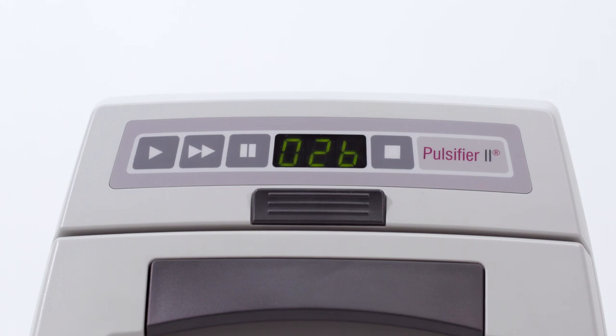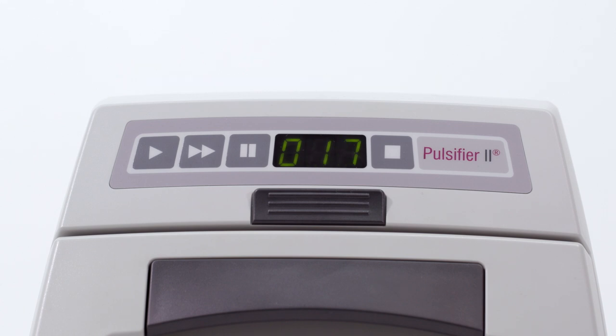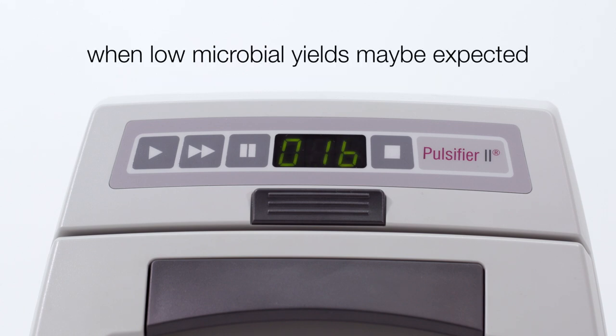There are two programs available to choose from. You can either select P1, which is a 15-second cycle, or P2, which is a 30-second cycle. P2 is commonly used when low microbial yields may be expected.